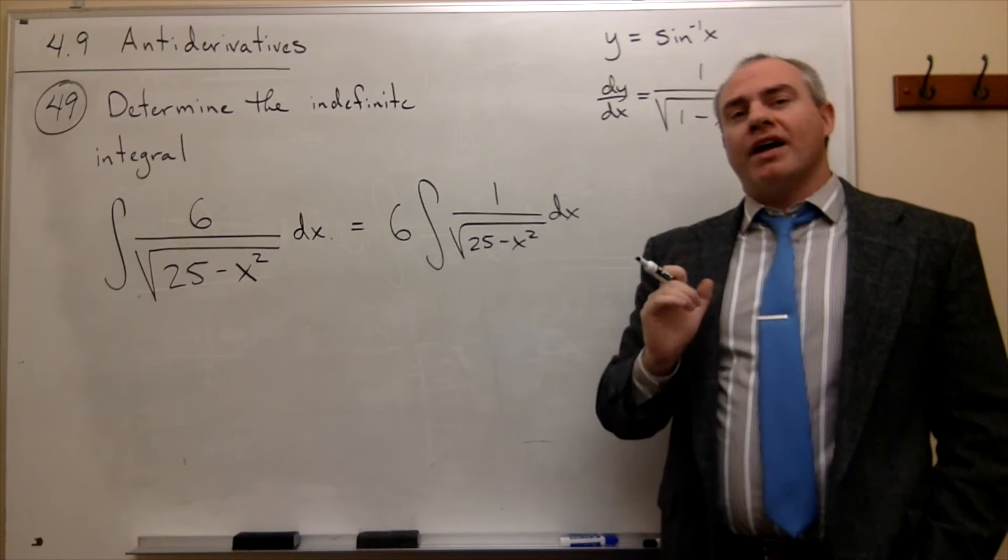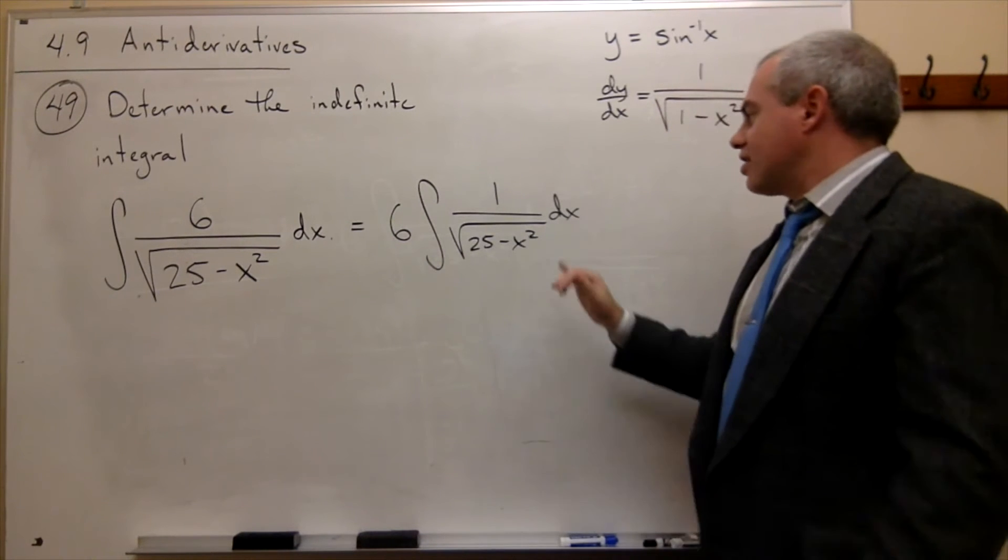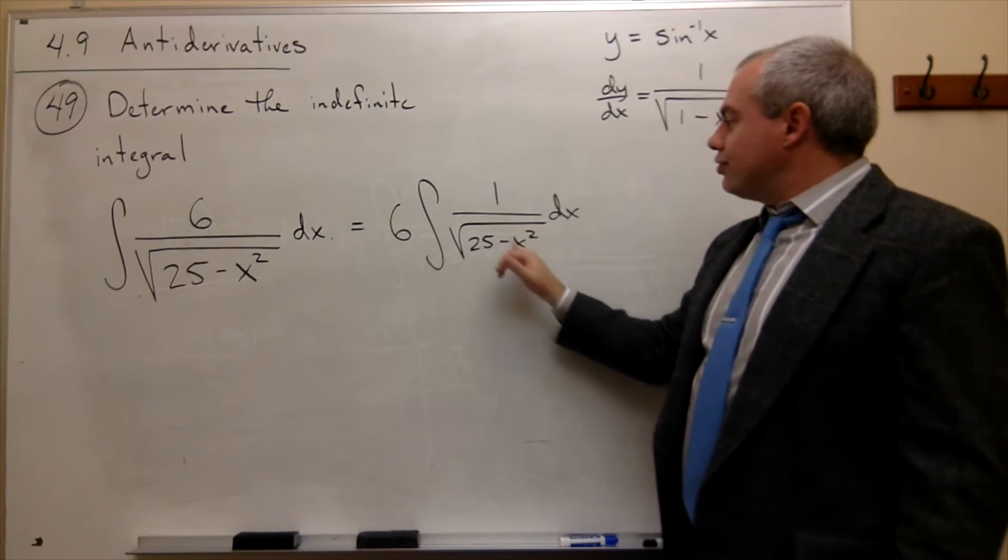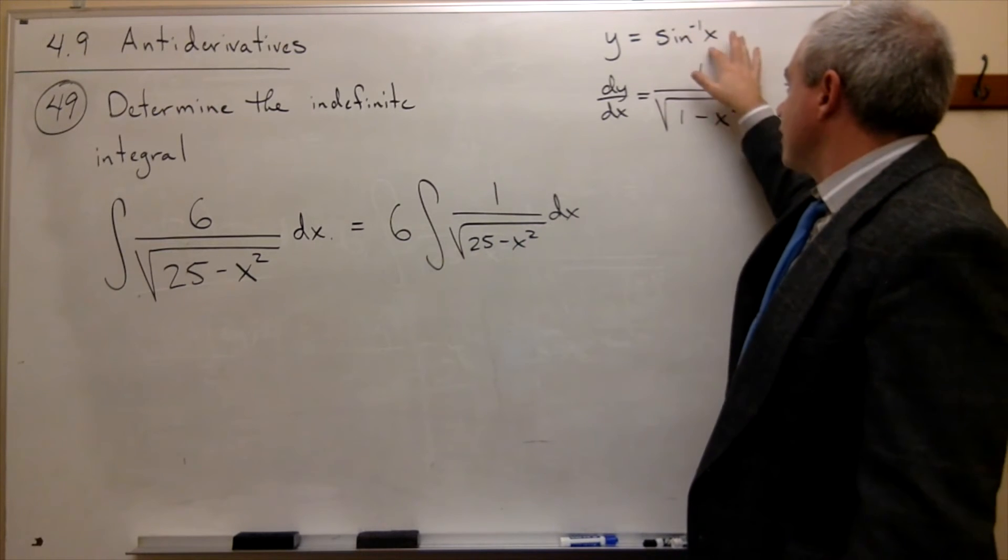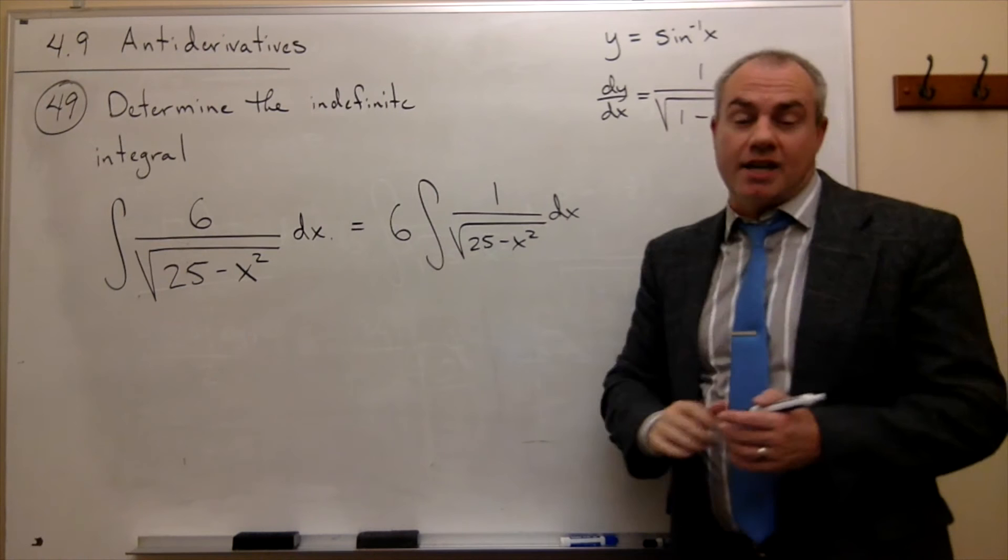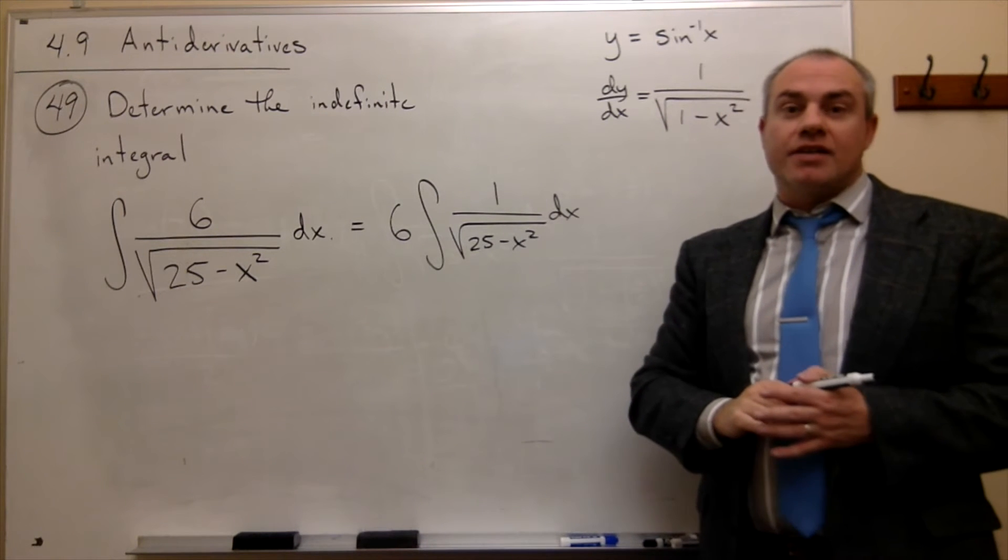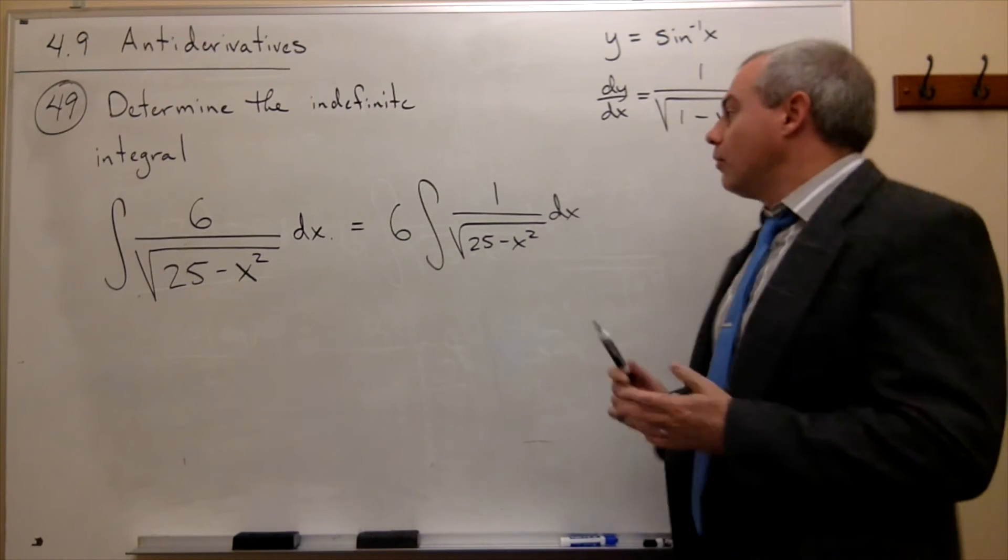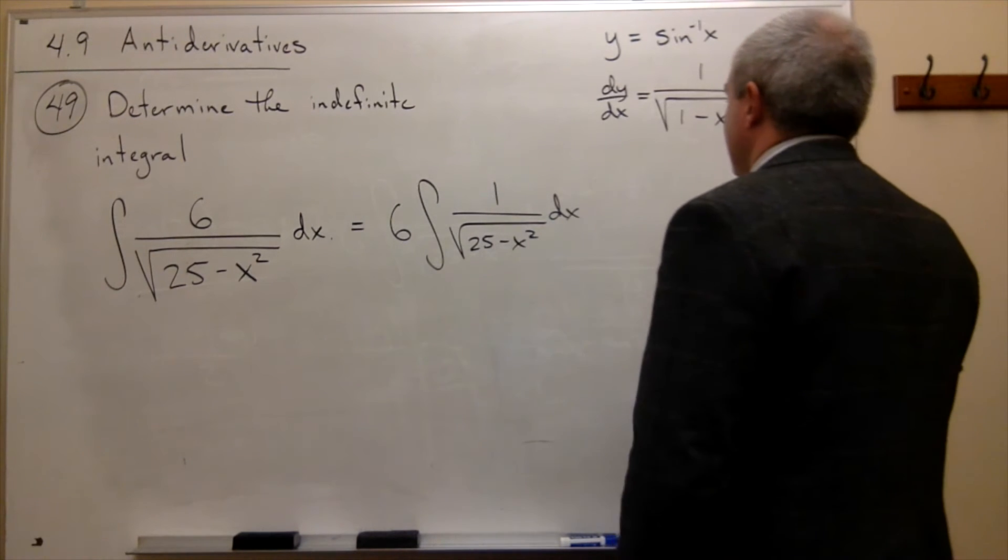Okay, and what I want to say is, okay, so usually this is sine inverse of x, but what if we had sine inverse of something close to x, like some multiple of x? And the multiple that I want to look at is,